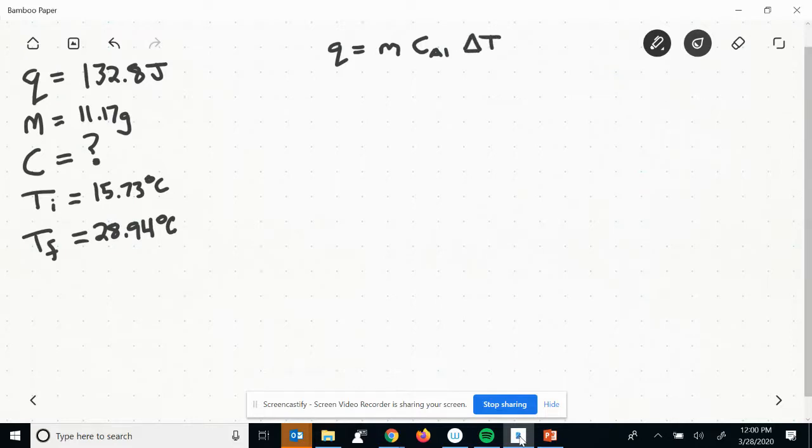So I plug in my heat energy, 132.8 joules. Plug in my mass, 11.17 grams. I don't know my specific heat capacity. So I'll leave that as is. And my change in temperature is going to be final minus initial, 28.94 minus 15.73. And that is all degrees Celsius.